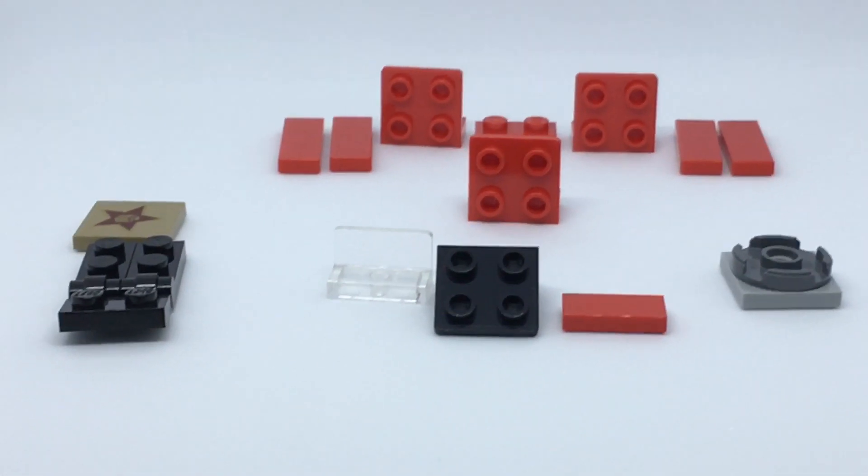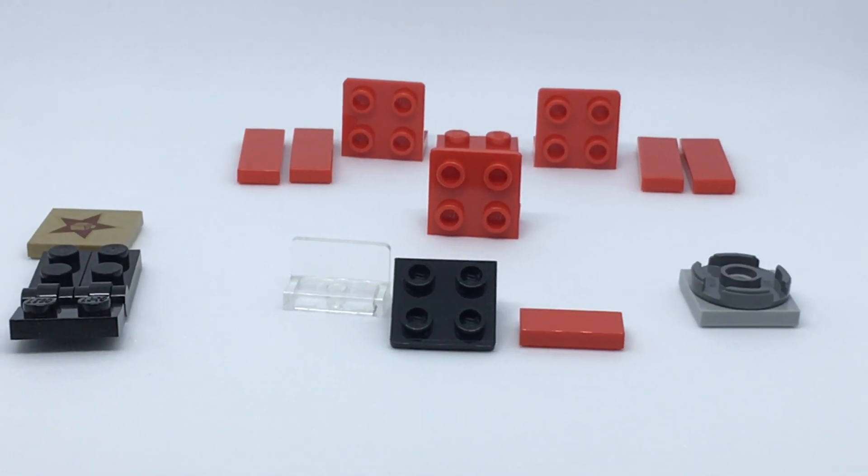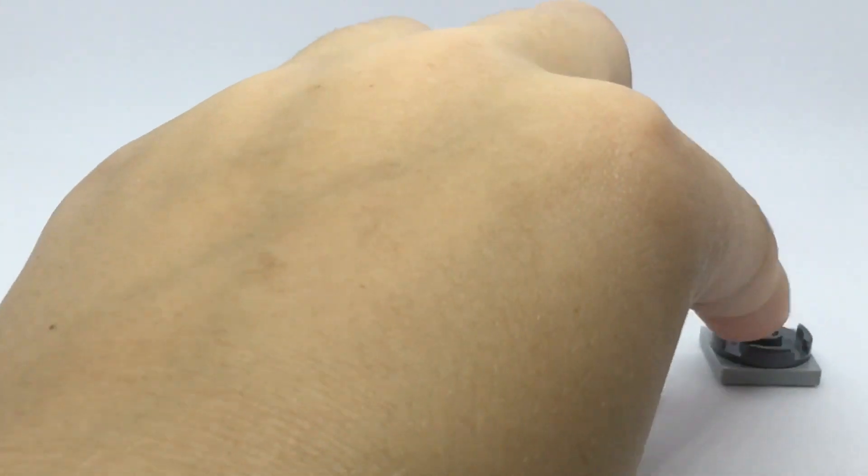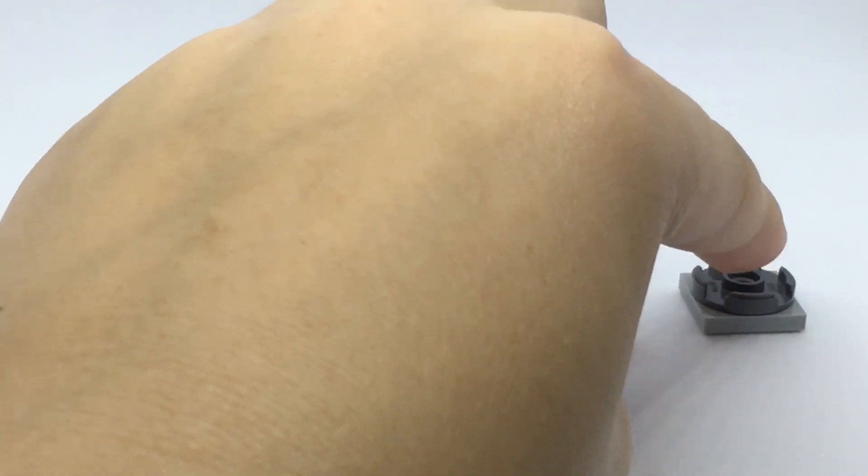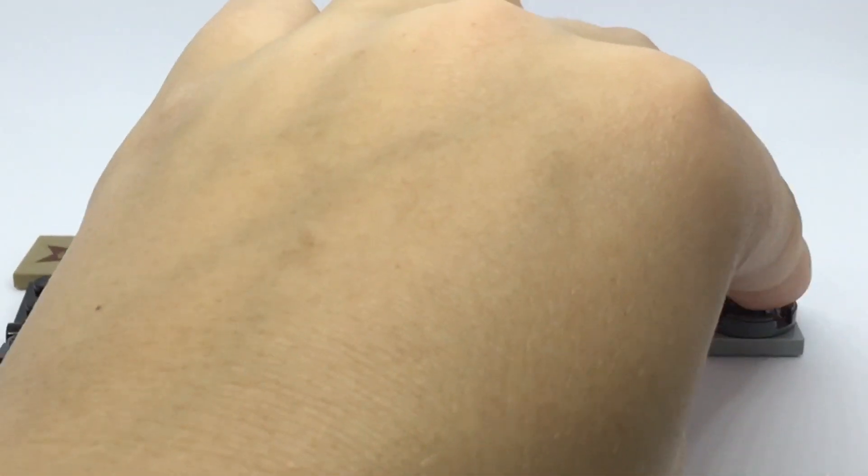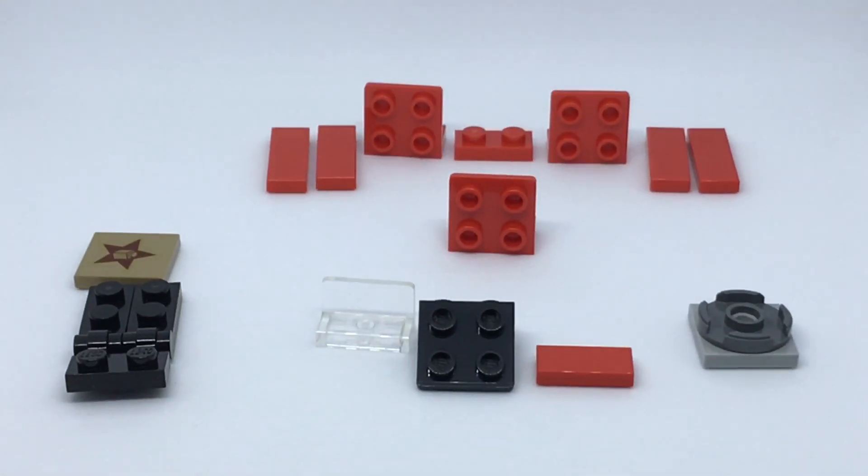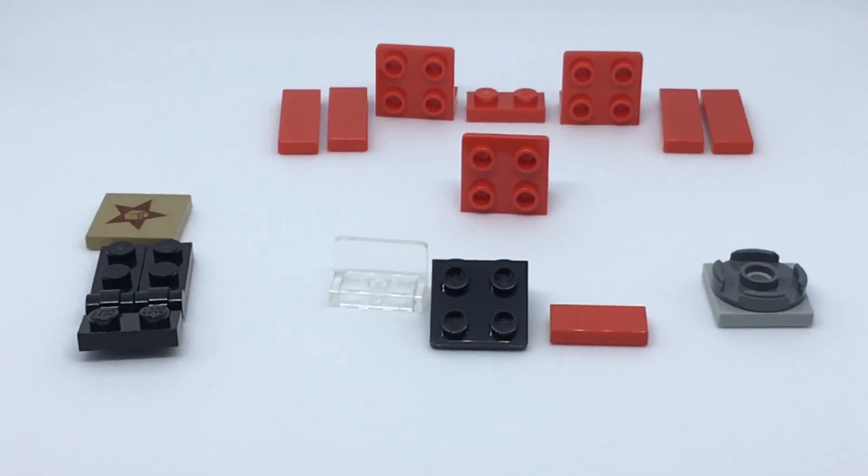These are the pieces that you will need. Go ahead and take a moment to pause the video. If you don't know what this is, this is a Lego 2x2 jumper plate with a disc on top. Pause the video if you need to get these.